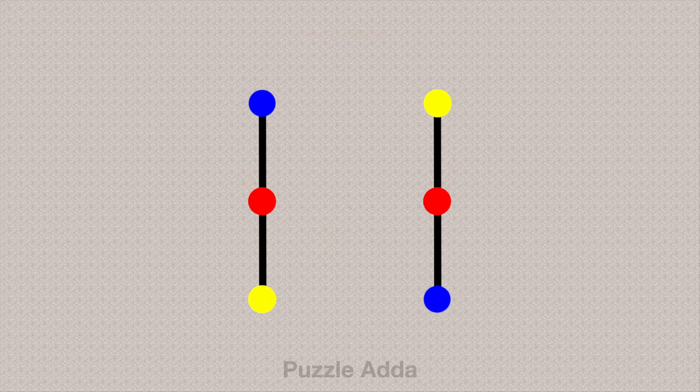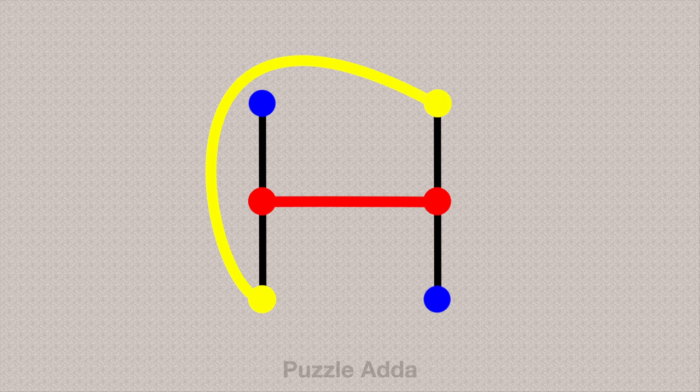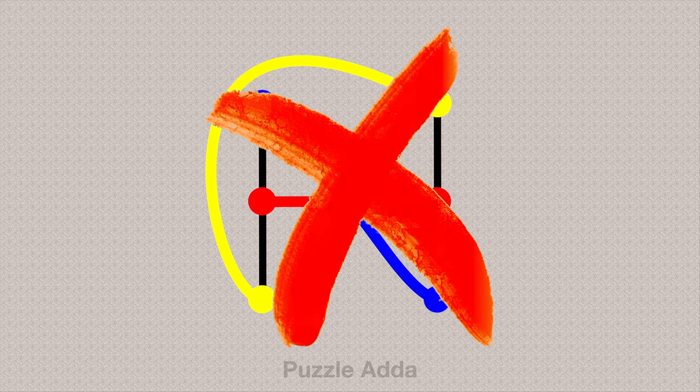Let's try one more time. Now, let's connect the red dots first. Then we will connect the yellow dots like this. Now if we have to connect the blue dots, it will require intersecting which is not allowed. So this is also not the right answer.